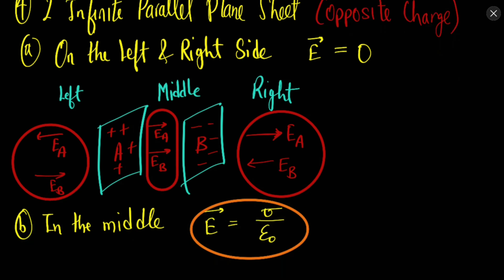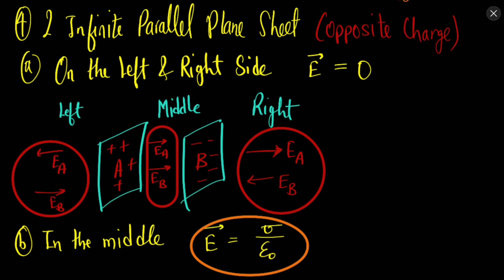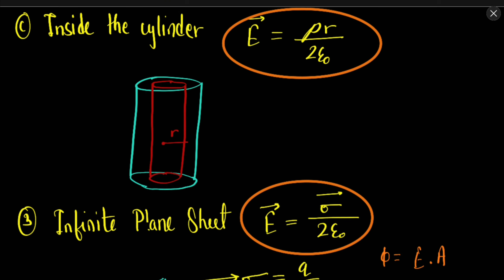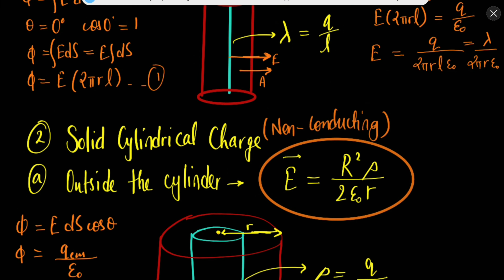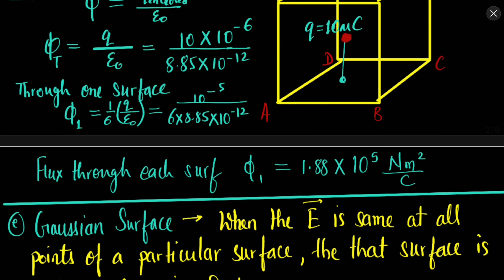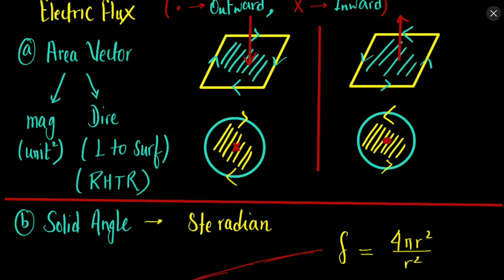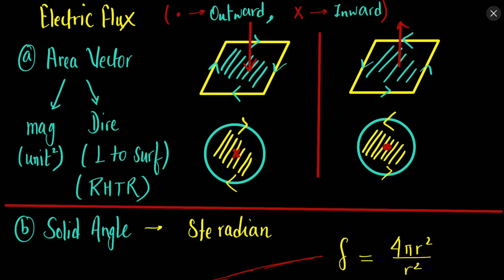These are a few of the different shapes for which we can find the electric fields, and similarly you can also find the potential for these different shapes. Gauss law is very useful in finding the electric field and potential for different types of continuous charge distribution shapes. From the next chapter we will discuss about the new device — the capacitor. Thank you.